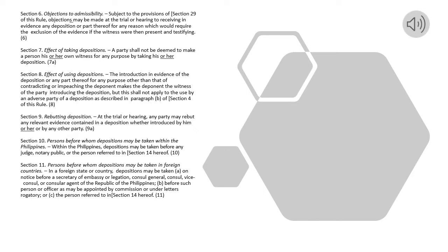Section 8. Effect of Using Depositions. The introduction in evidence of the deposition or any part thereof for any purpose other than that of contradicting or impeaching the deponent makes the deponent the witness of the party introducing the deposition, but this shall not apply to the use by an adverse party of a deposition as described in Paragraph B of Section 4 of this rule.